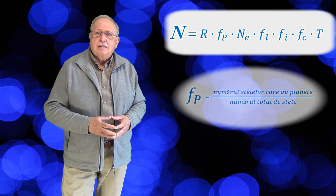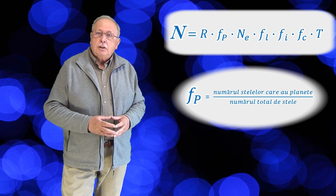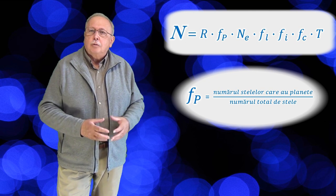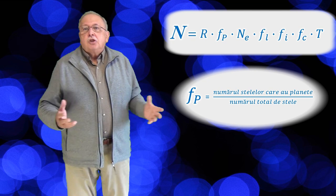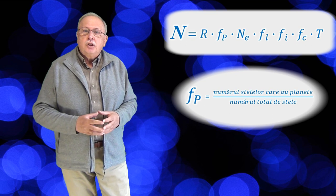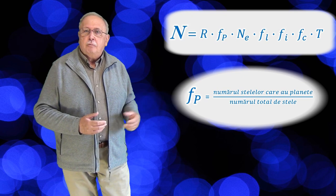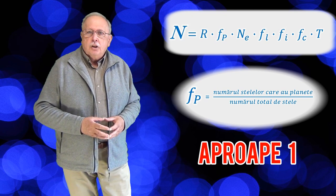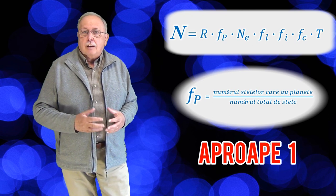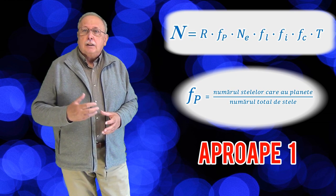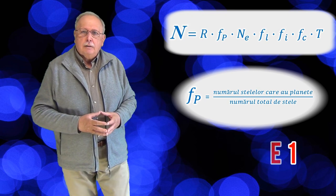FP, fracțiunea stelelor care au planete, este factorul din ecuația lui Drake care ne poate face optimiști în legătură cu progresul cunoașterii noastre, deoarece până acum vreo 30 de ani nu știam nimic despre el. Iar azi știm că aproape toate stelele au planete, ceea ce înseamnă că fracția FP se apropie de valoarea 1. Și știm acest lucru datorită dezvoltării aparatelor de observație astronomică care permit punerea în evidență a planetelor în cazul stelelor care nu sunt foarte departe de noi.